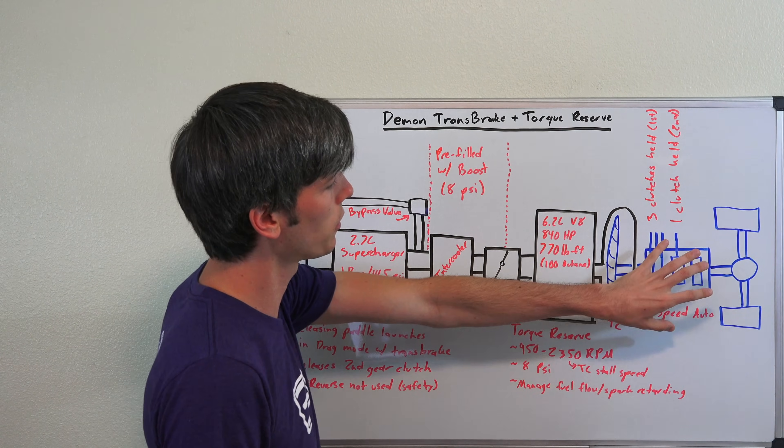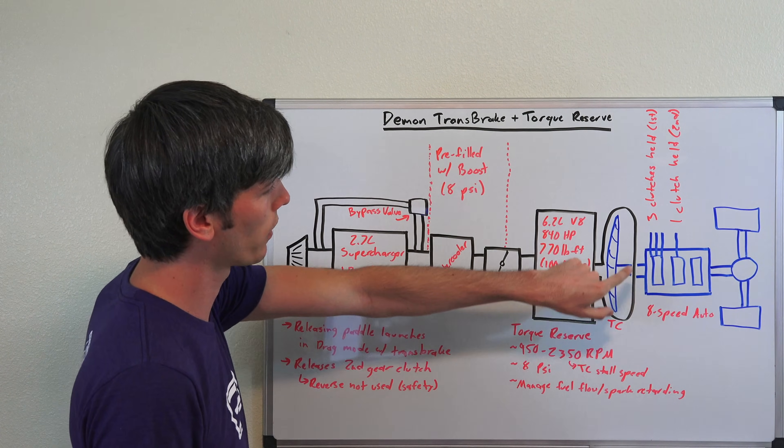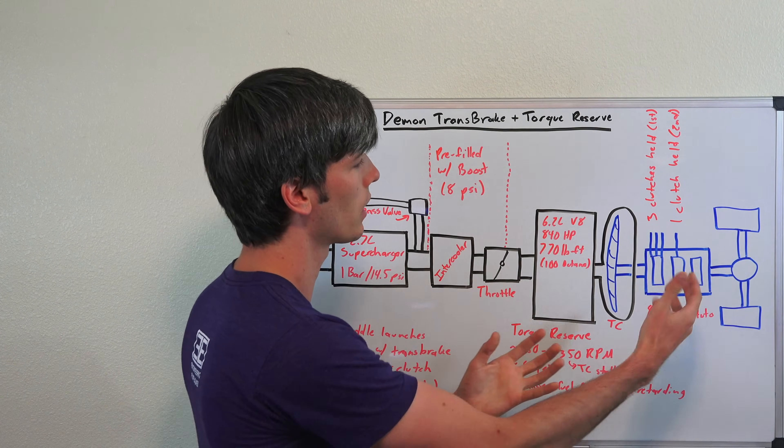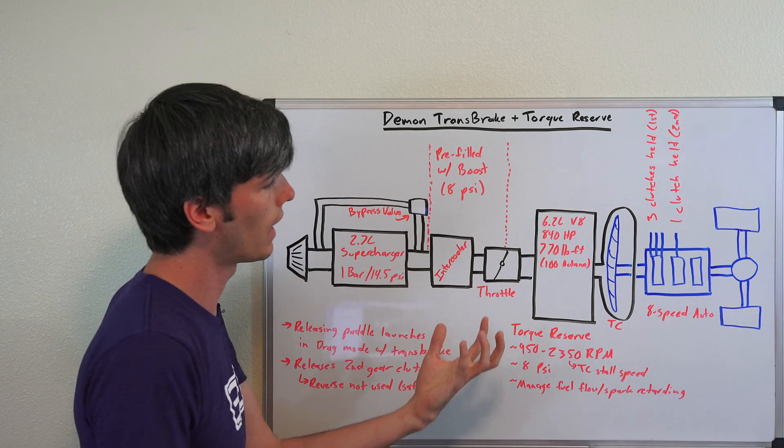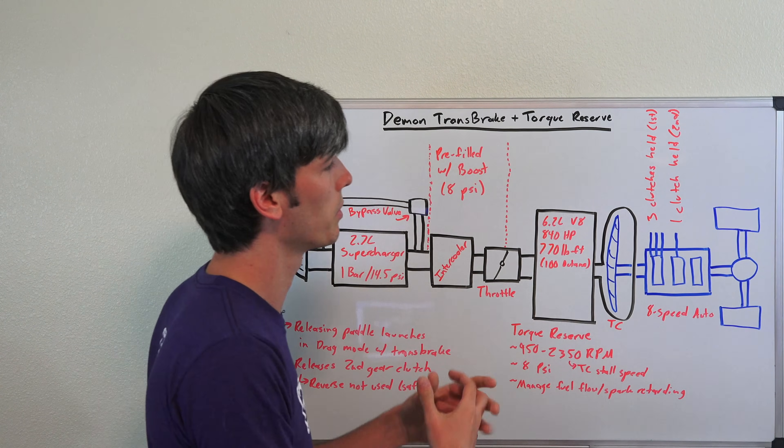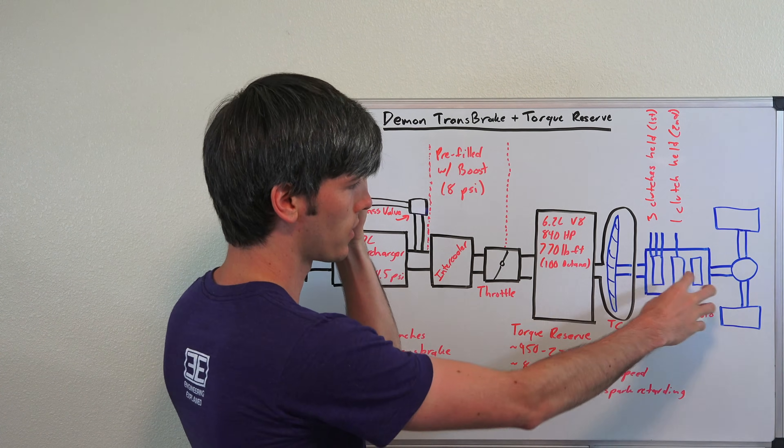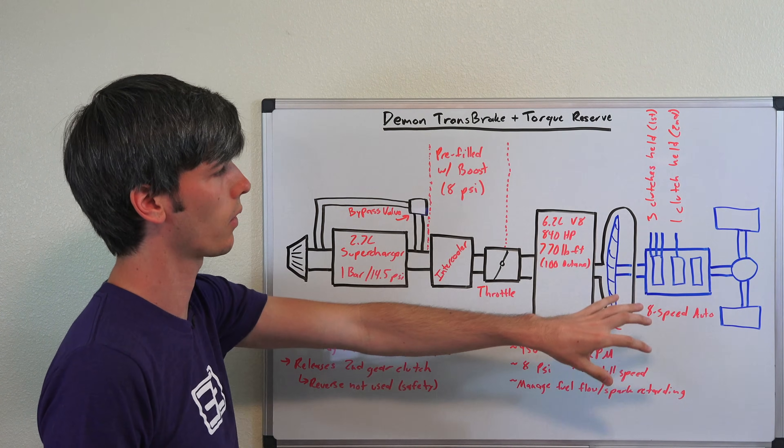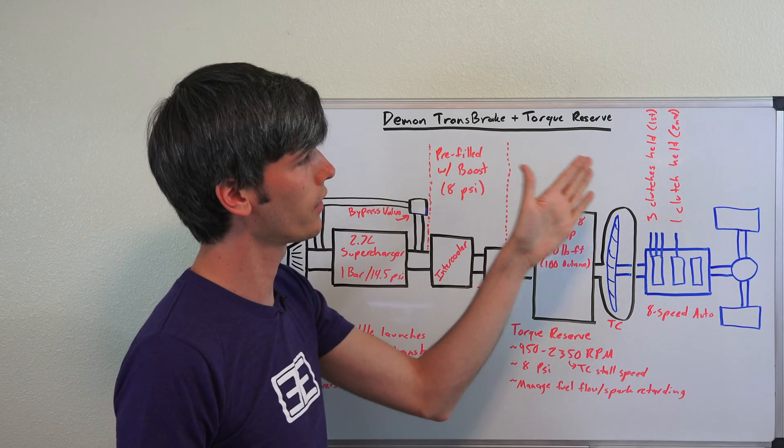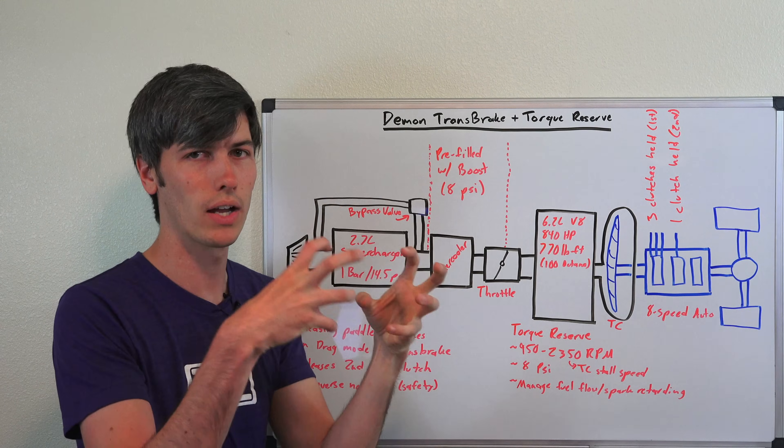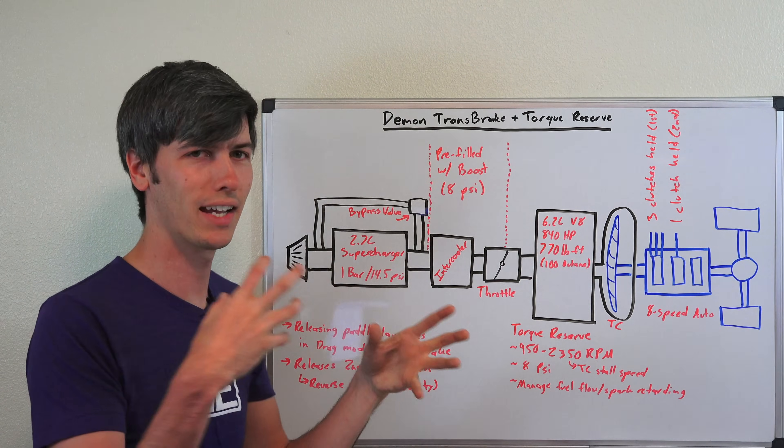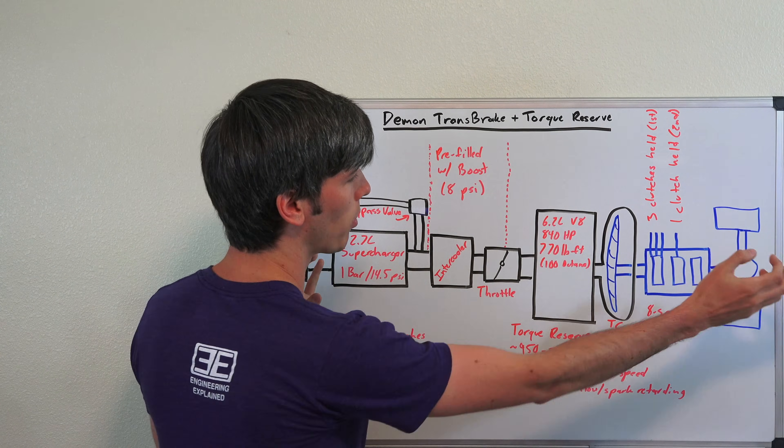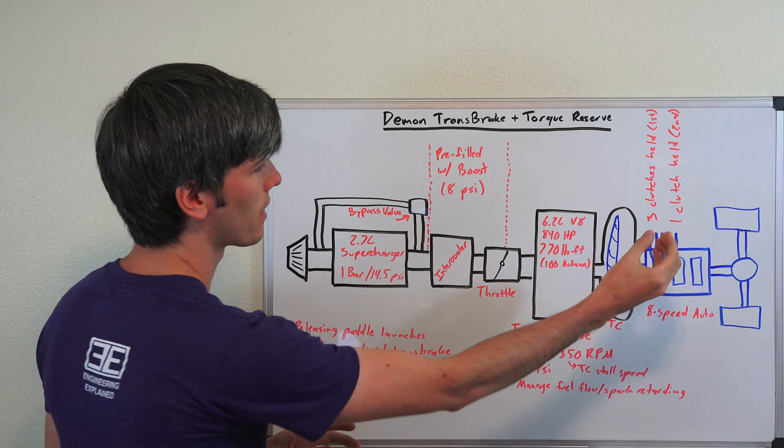So then you have your 8-speed automatic transmission where that torque is going to. And in this trans brake mode what you do, you have three clutches basically for every gear, and in order to use any one gear you're going to be using three clutches. This is certainly a simplified drawing, but basically you're going to hold all three clutches necessary to be in first gear, and then you're going to hold one clutch for second gear. And because you've got two gears held, you can't accelerate because those fight against each other. And so it holds all of that engine torque and prevents the rear from spinning because the transmission is in two gears at the same time.